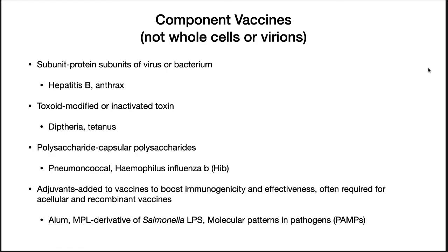Finally, there are component vaccines — not whole cells or virions, but a part of a pathogen that raises a strong immune response. Subunit vaccines use protein subunits of a virus or bacterium; examples are hepatitis B and anthrax. Toxoids can also be used — these are modified or inactivated toxins that expose humans to them, raising antibodies that then inactivate the toxin.